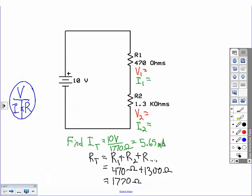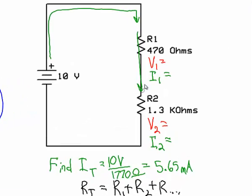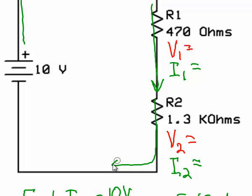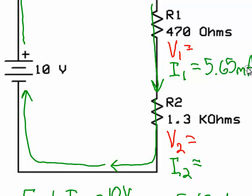Since there's only one pathway for current to flow through the circuit, all the current has to flow through the first resistor and through the second resistor and back to the supply. So current one is also 5.65 milliamps, and the current flowing through resistor two is 5.65 milliamps.